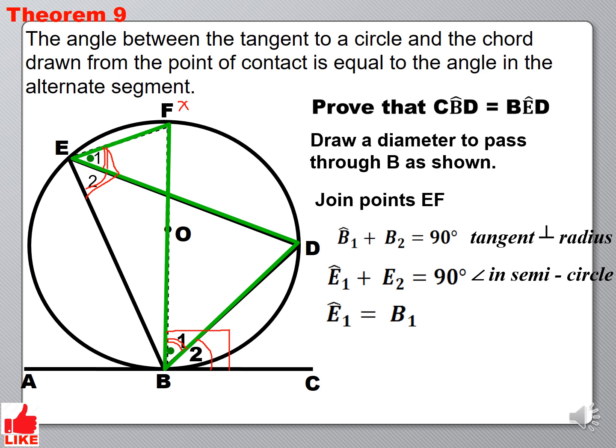Now, if B1 and E1 are equal, yet B1 plus B2 is 90 degrees and E1 plus E2 is 90 degrees. Now, if these two angles here are equal to each other, it follows that these two here are also equal to each other. So, that is a conclusion that we now make. Therefore, angle E2 and B2 are equal.